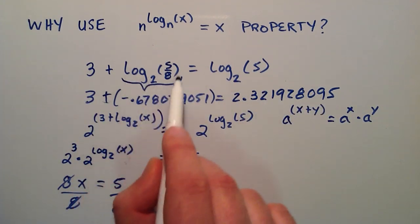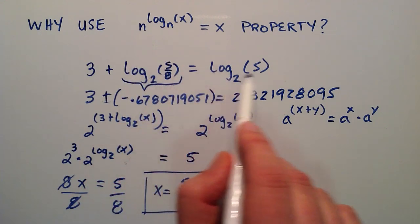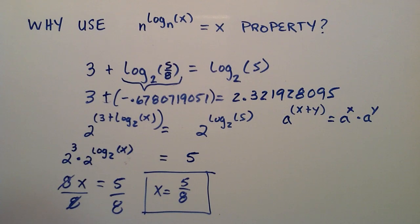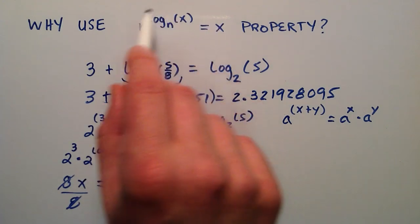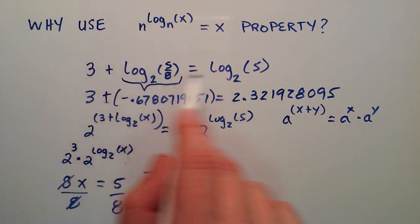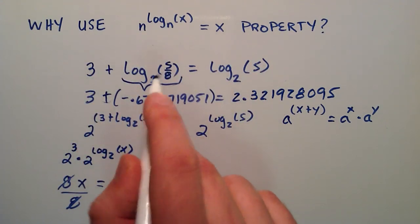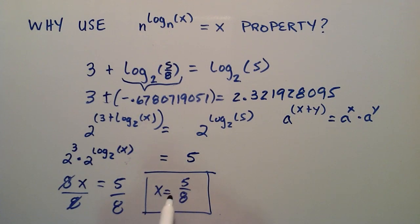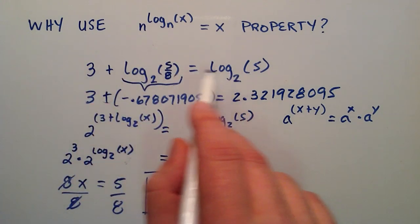So once again, I solved these by using the change of base formula and by plugging that into my calculator, and you can see how to use the change of base formula in lesson 4. But that was an example of when you would want to use this property right here. So by using this property, we were able to manipulate this original equation with the x in here, and solve that x had to be equal to 5/8 for this statement to be true.